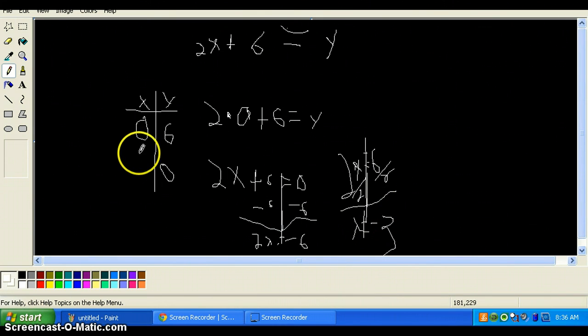And then so it would be 0, 6, and then minus 3 and 0. So then this is how you graph it.